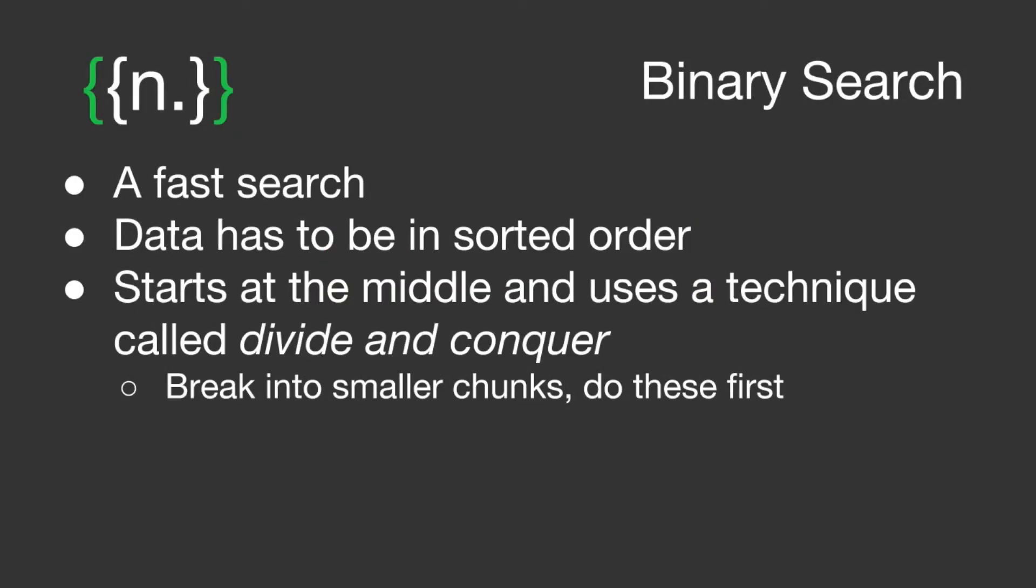So what is binary search? It's a fast search. The reason it's fast is because it operates on data which is sorted. So it can't work on any ordering of data like a linear search can. It starts at the middle of the list and uses a technique called divide and conquer to break the data into smaller chunks.